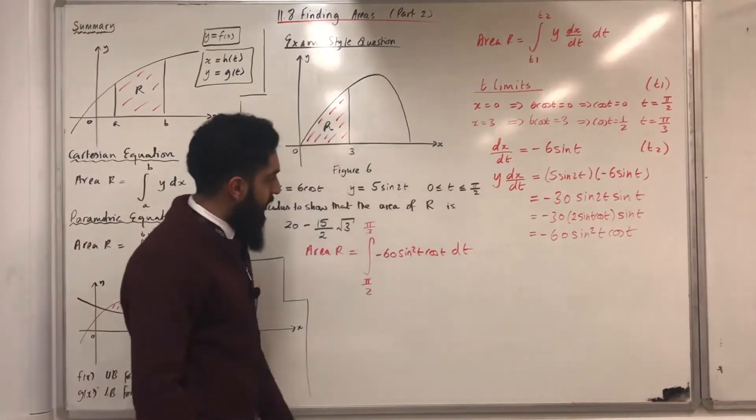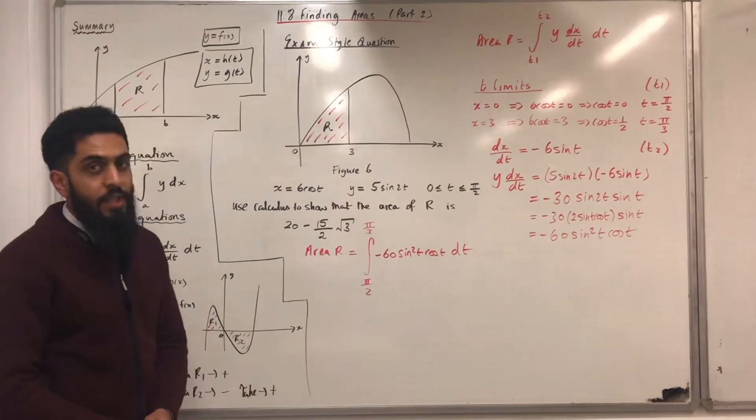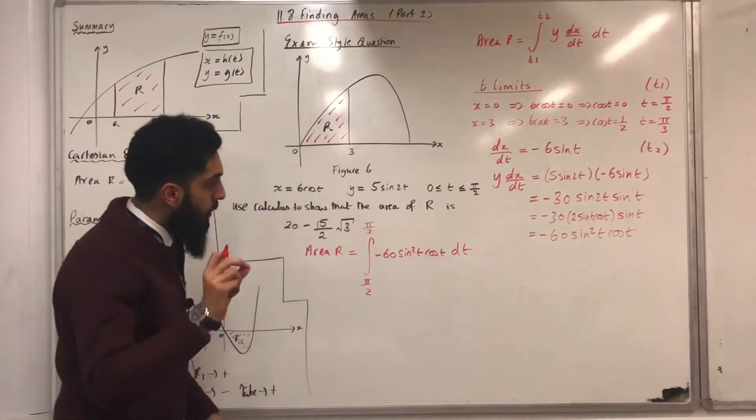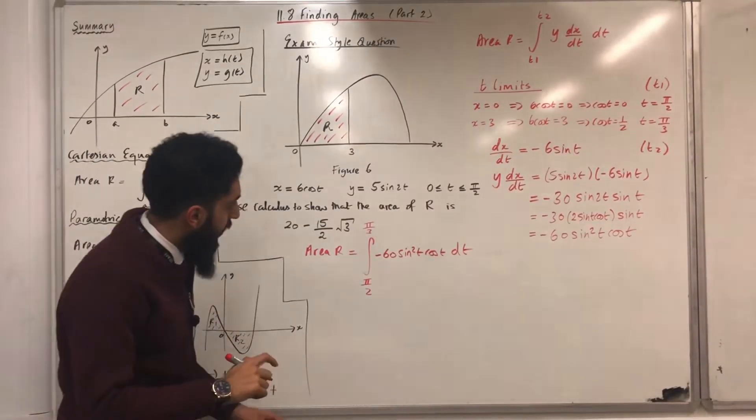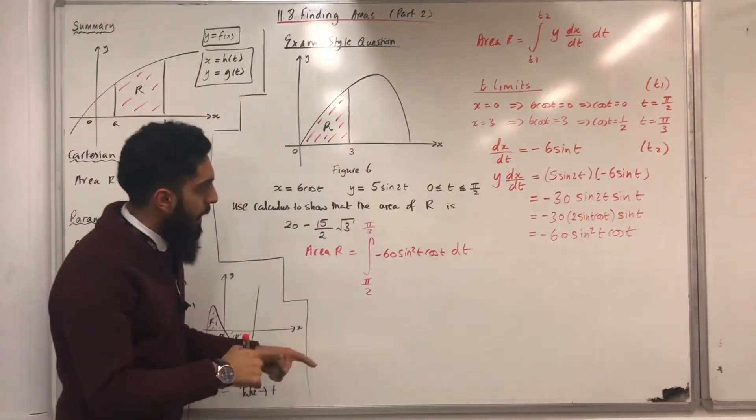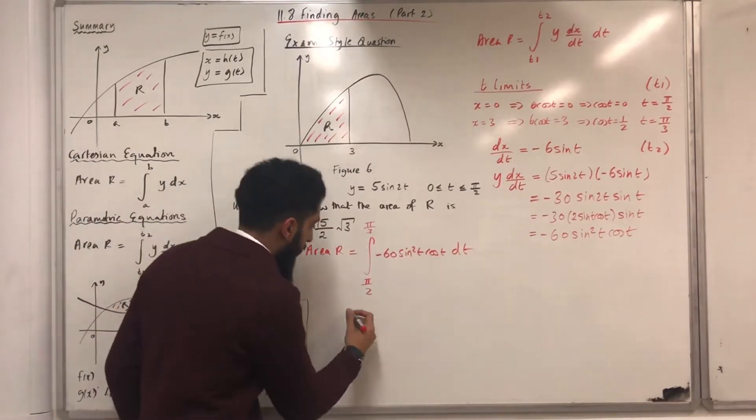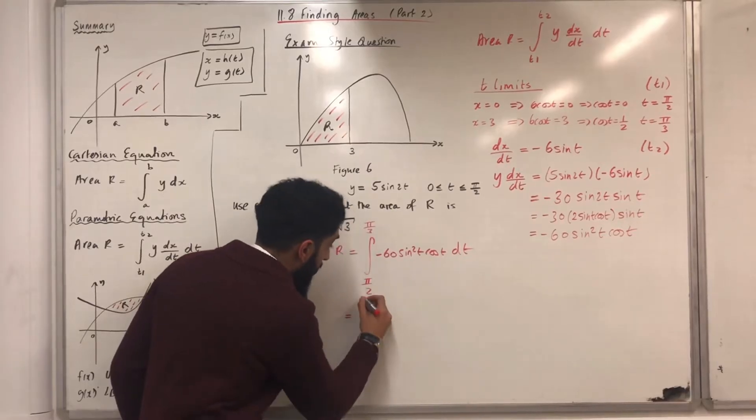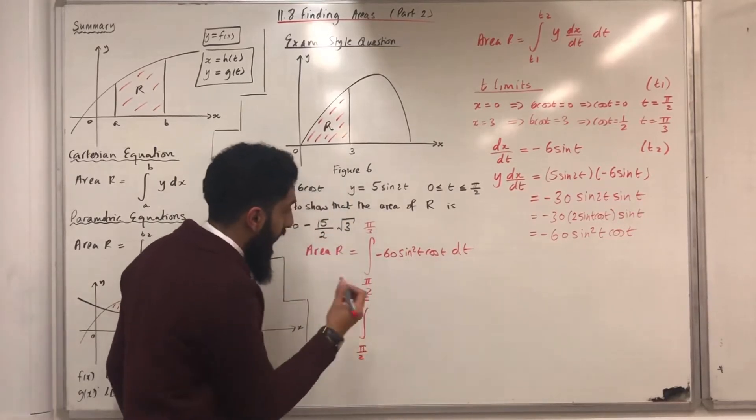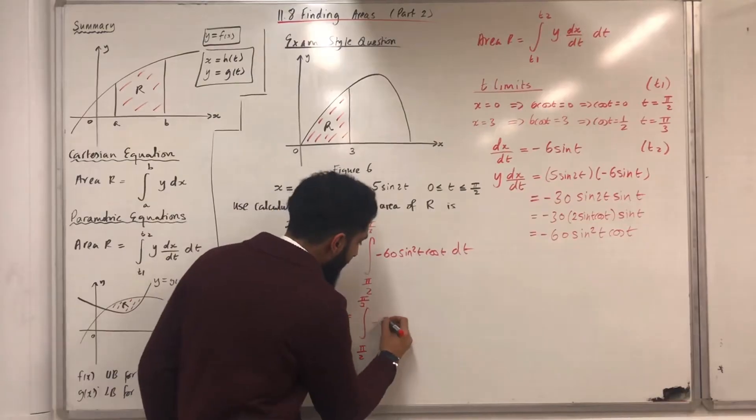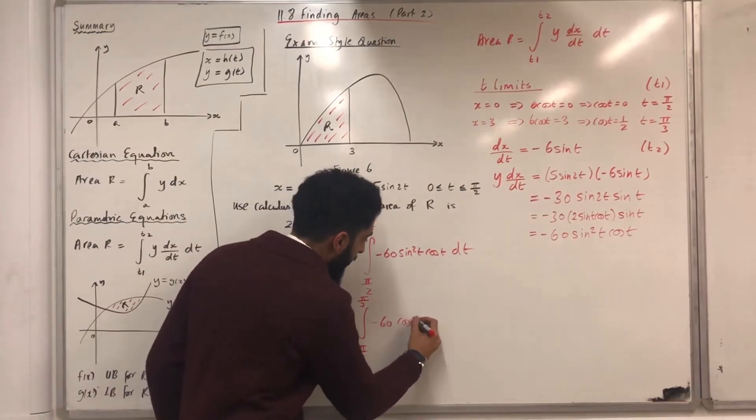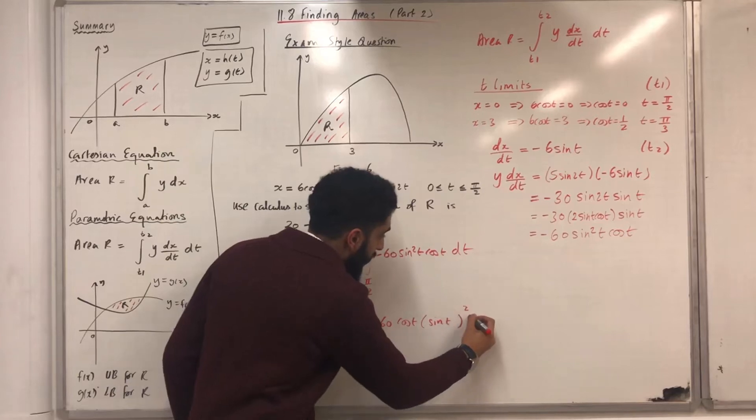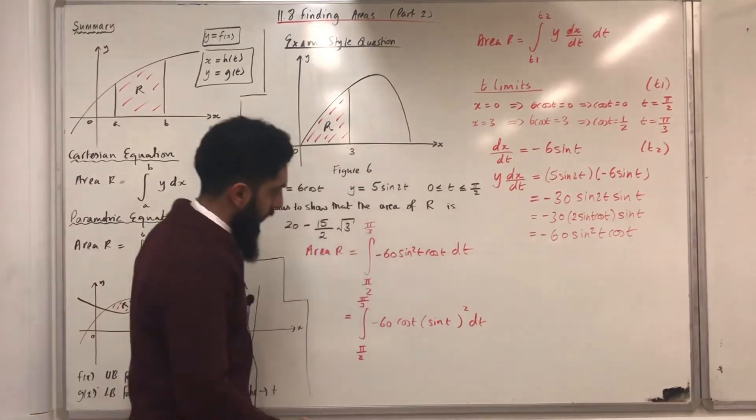Now, we need to select a suitable technique for integration to integrate this. Okay, no problem. There is a suitable technique that we can use, ladies and gents. Before I use that suitable technique, I'm going to rewrite this integral as follows: the integral from pi over 2 to pi over 3 of minus 60 cos t sin t in bracket to the power 2 dt.